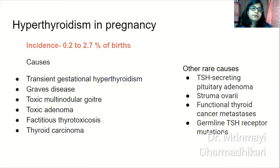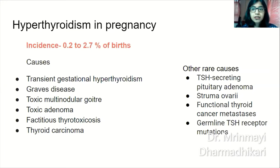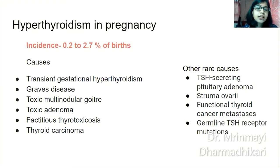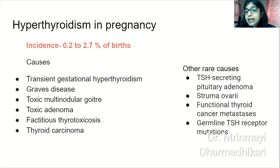Hyperthyroidism in pregnancy has an incidence of 0.2 to 2.7% of births. Causes include transient gestational hyperthyroidism — one of the most common causes — followed by Graves disease, toxic multinodular goiter, toxic adenoma, factitious thyrotoxicosis due to inadvertent or excessive ingestion of thyroid hormones or thyroid-inducing drugs like amiodarone, and thyroid carcinoma. Rarer causes include TSH-secreting pituitary adenoma, struma ovarii (dermoid cysts with functioning thyroid tissue), functional thyroid cancer metastasis, and germline TSH receptor mutations.